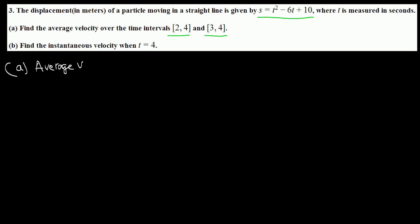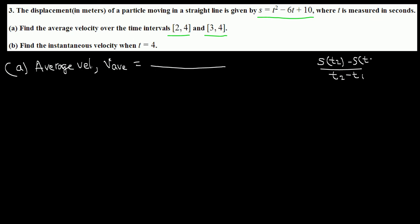Part A: average velocity is given by the slope of the secant line over [2,4]. How do we find the slope of the secant line? It's rise over run. Run means change in time, so that's t2 minus t1. Rise means the corresponding displacements: s(t2) minus s(t1).